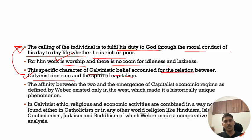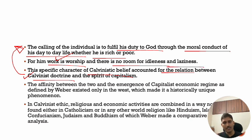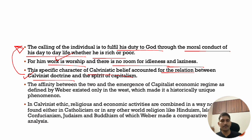Then he chose some Calvinist doctrines — there could be 50 things in Calvinism, but he selected those where there is no room for idleness and laziness, rational organization of work. He used some traits of capitalism and some traits of Calvinism, linked them together, and gave his theory of Protestant Ethic and Spirit of Capitalism. The affinity between the two and the emergence of the capitalist economic regime, as defined by Weber, existed only in the west, making it a historically unique phenomenon.